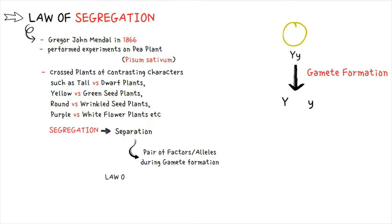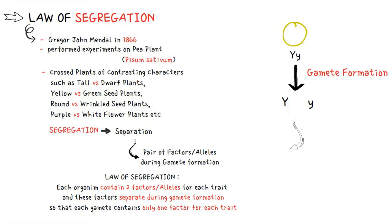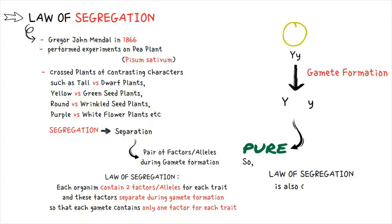This plant has the genotype capital Y small y. It produces gametes, each with a single copy of that pair. The Law of Segregation states that each organism contains two factors or alleles for each trait, and these factors separate during gamete formation so that each gamete contains only one factor for each trait.